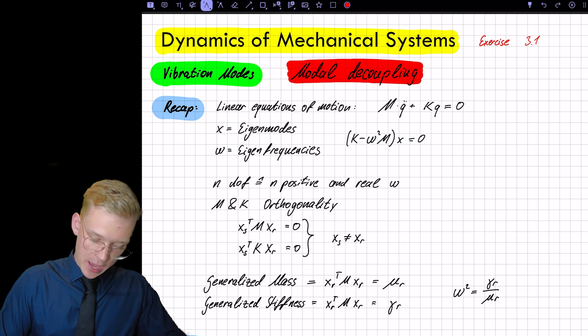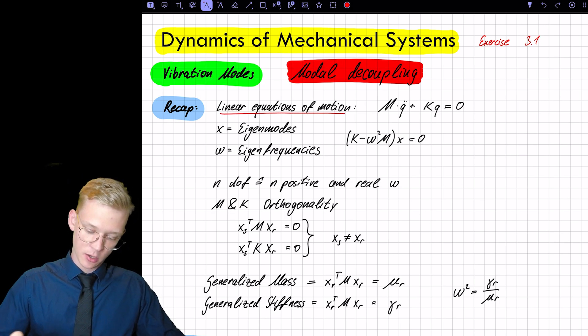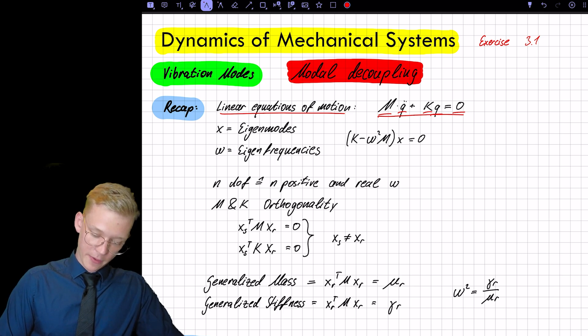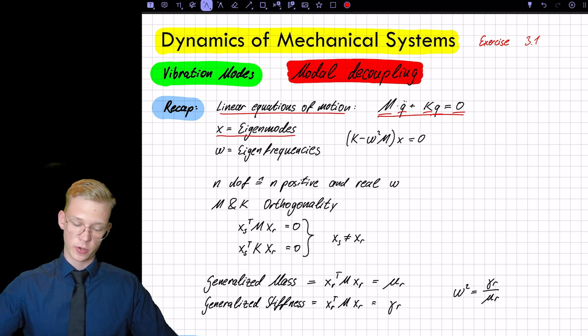So we have a linear set of equations of motion. This is we have the m matrix, we have a q double dot and a k matrix and just a normal q. For now we have no additional forces acting on our system. We have x's that are our eigenmodes. They go from x1, x2, x3 up to xn, the degrees of freedom that we have.